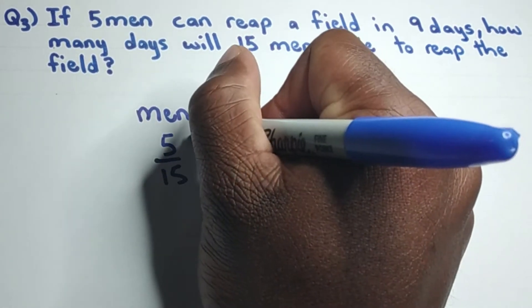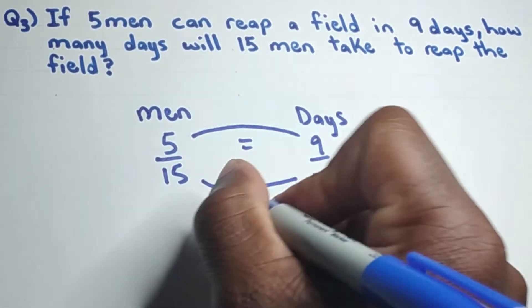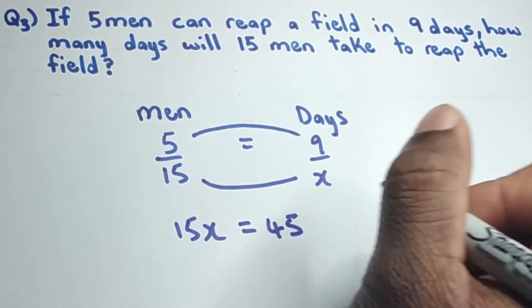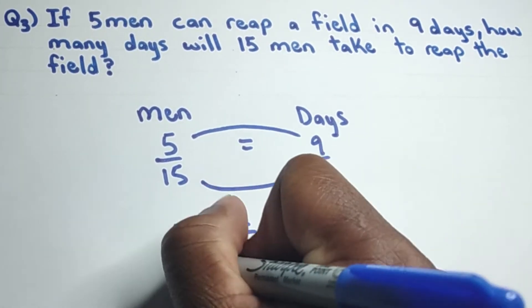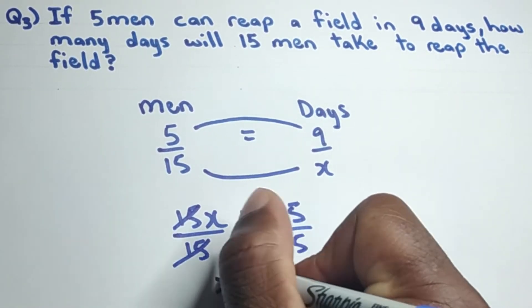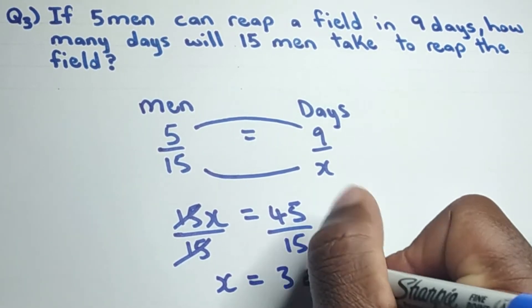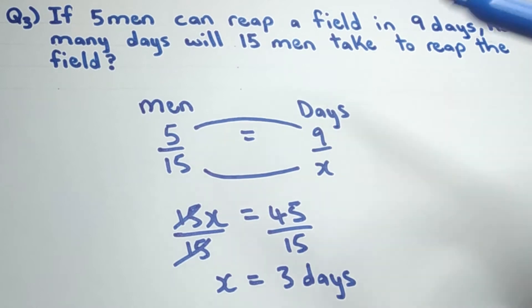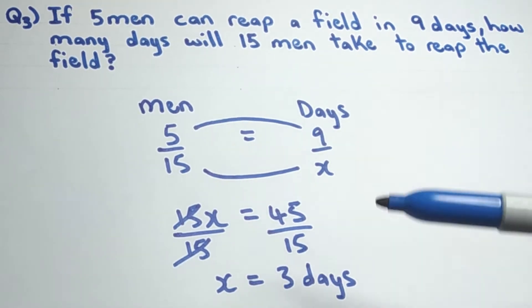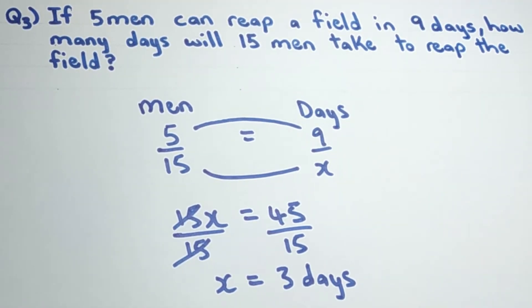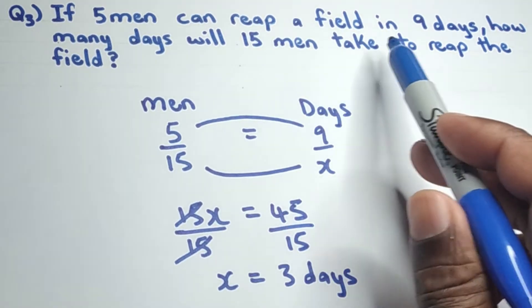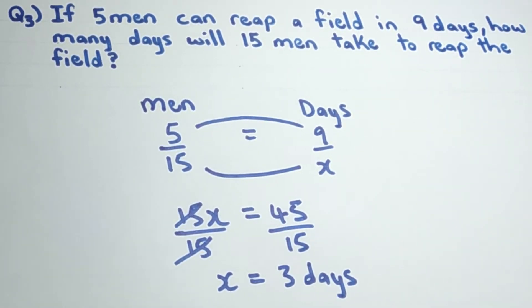Since this is an indirect proportional problem, we multiply straight across: 15 times x gives 15x, equal to 5 times 9 which is 45. Dividing both sides by 15 gives x = 3 days. So if you increase the number of men reaping the field, the time it takes decreases. Therefore, it will take three days for 15 men to reap the field.